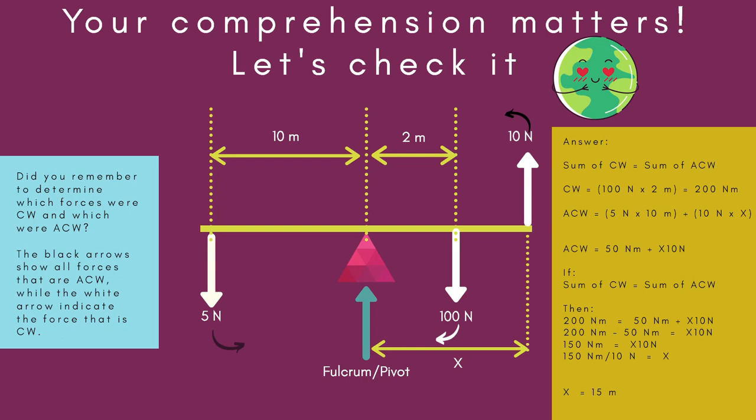So, then you would have 200 Newton meters is equal to 50 Newton meters plus X, 10 Newtons. We do a little bit of transposition and we get that 150 Newton meters is equal to X, 10 Newtons. To find X, we just divide both sides by 10 and we get that X is equal to 15 meters. A force of 10 Newtons moving in anti-clockwise direction is therefore 15 meters away from the pivot.